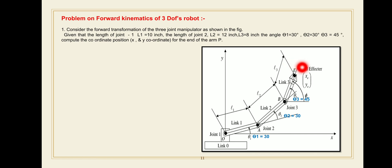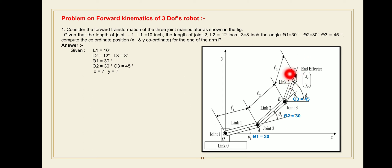Write down the given data. L1 is 10, L2 is 12, L3 is 8. Then theta 1 is 30 degrees, theta 2 is 30 degrees, and theta 3 is 45 degrees. You have to find out the Cartesian coordinates of the end effector — the unknown position in Cartesian space, X and Y.